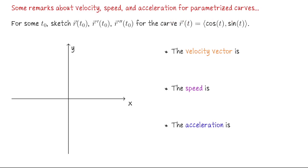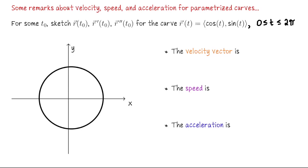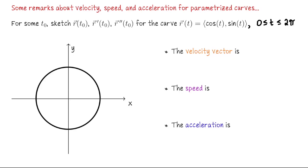Let's look at the plane curve r of t equals cosine of t, sine of t for t values between 0 and 2 pi. We know that this vector-valued function is going to trace out the familiar unit circle in R2, revolving around it once in a counterclockwise fashion. If we pick some input t-naught, r of t-naught is a vector whose x-coordinate is cosine of t-naught and y-coordinate is sine of t-naught.